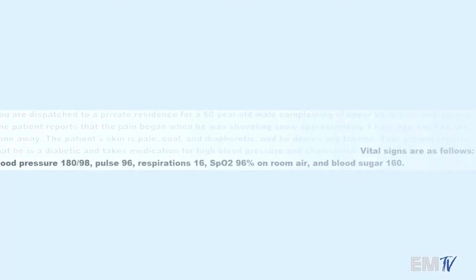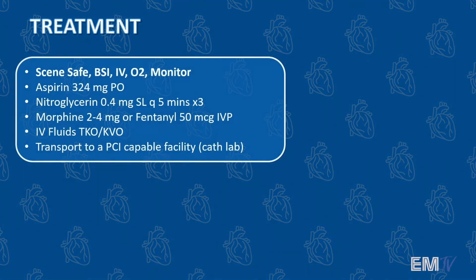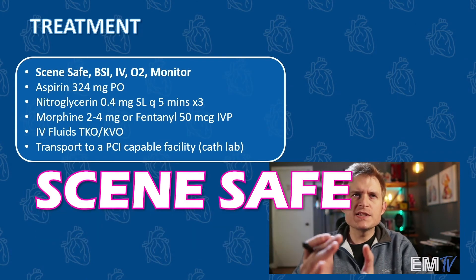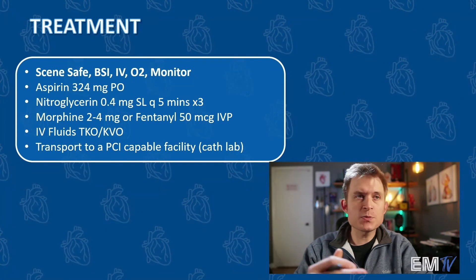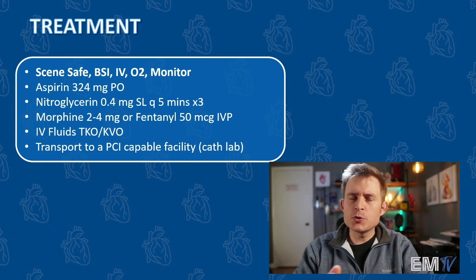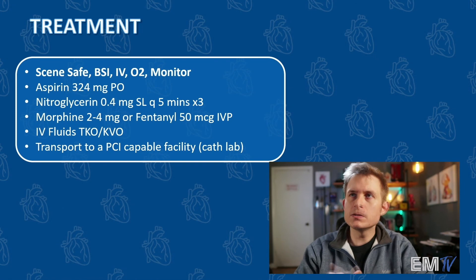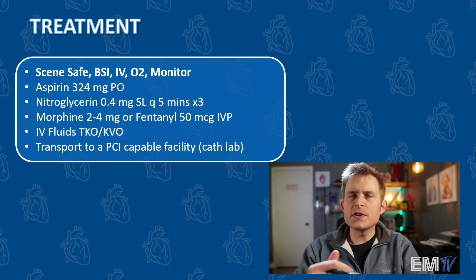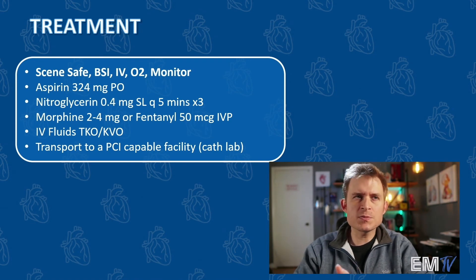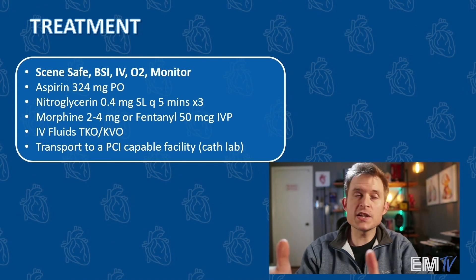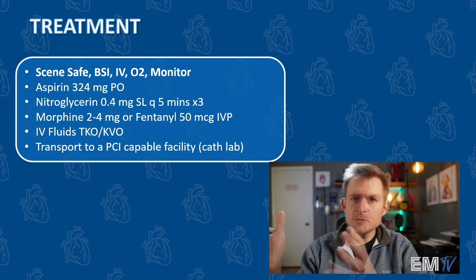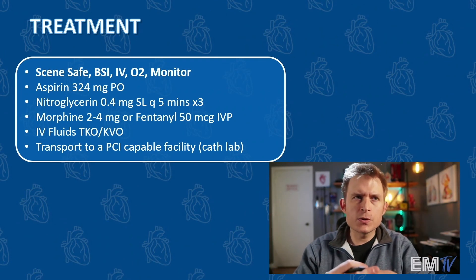For treatment, you're going to regurgitate the mantra scene safe, BSI, IV, O2, monitor. You'll then administer aspirin 324 milligrams by mouth, nitroglycerin 0.4 milligrams sublingually — either as a tablet or a spray — every five minutes up to a maximum of three doses. You can consider giving morphine 2 to 4 milligrams or fentanyl 50 micrograms IV push. Hang fluids but keep them at TKO or KVO rates, then transport the patient to the nearest PCI-capable facility — a hospital with a cath lab. For extra brownie points, mention placing pads on the patient's chest, because anterolateral MIs involving the left ventricle tend to produce lethal ventricular dysrhythmias as they progress.